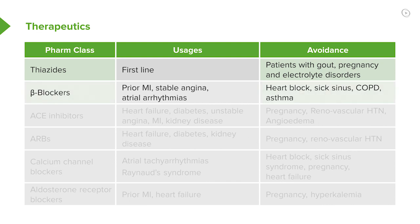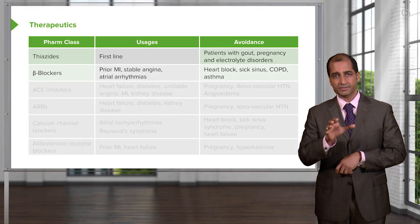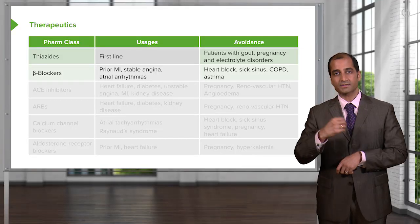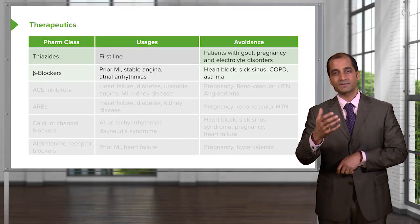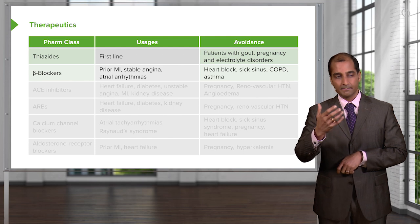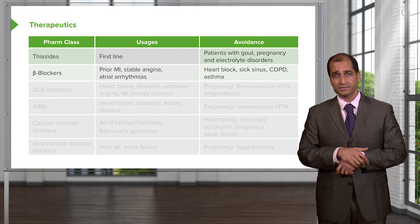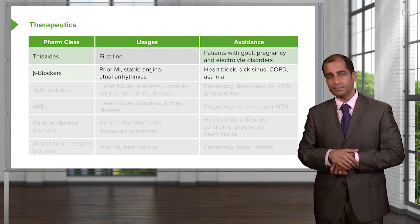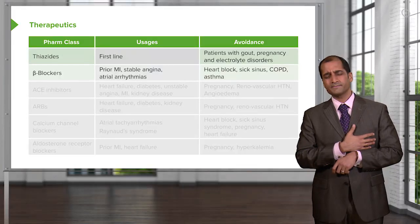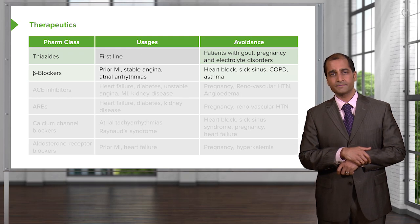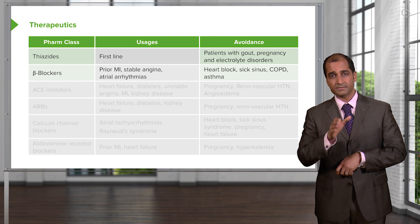Beta blockers: prior MI, stable angina, arrhythmia. What are you trying to do in those patients? Well, hypertension. But if it's stable angina, remember, you're trying to decrease the oxygen demand of the heart. By giving a beta blocker in stable angina — your patient walks a couple of blocks and has chest pain that stops when they rest — that's exertional stable angina. Beta blocker is appropriate.